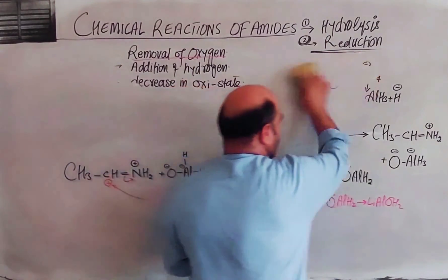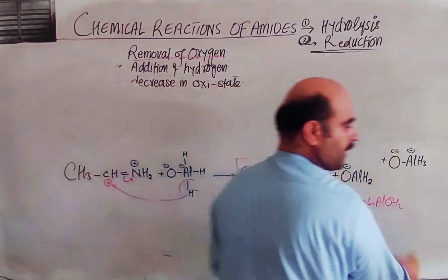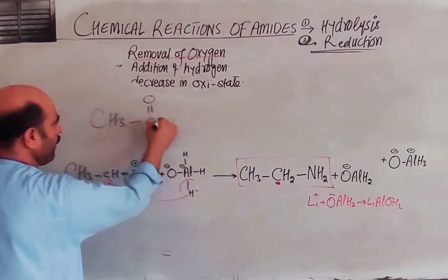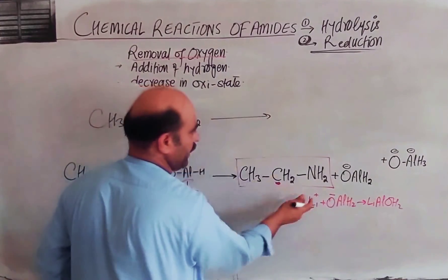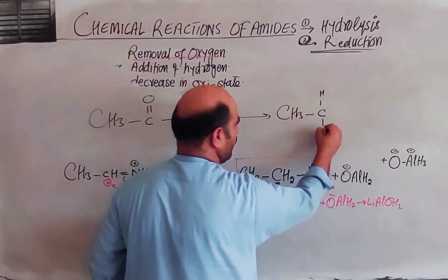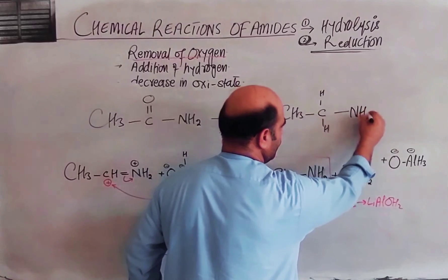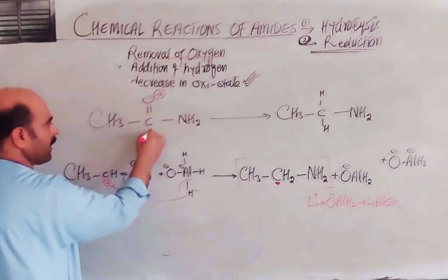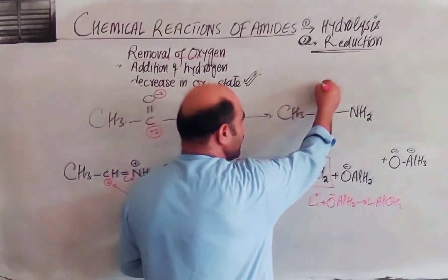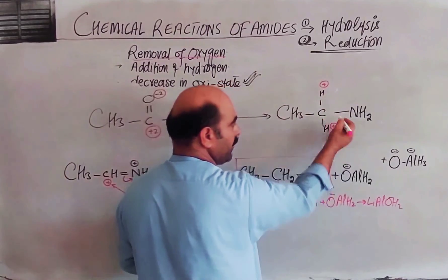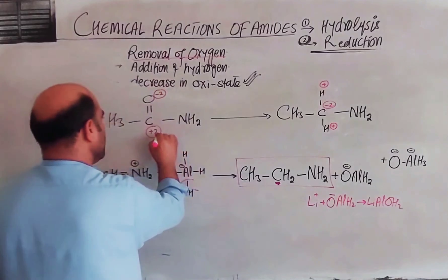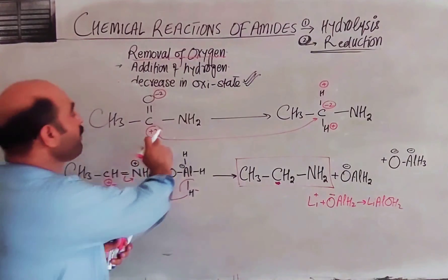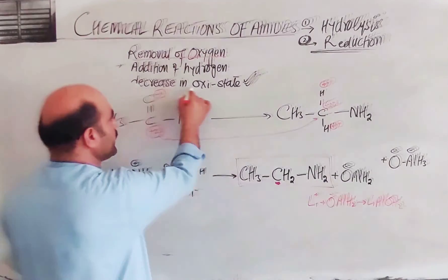For example, CH3-C(=O)-NH2 is converted to CH3-CH2-NH2. In the amide, the carbon oxidation state is plus 2; in the amine product, the carbon oxidation state is minus 2. This decrease in oxidation state from plus 2 to minus 2 confirms this is called reduction.